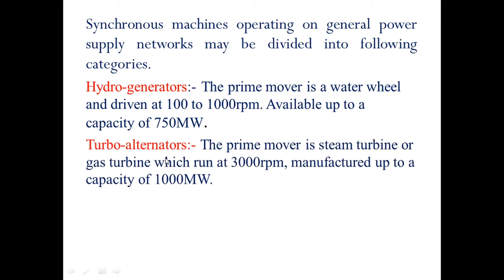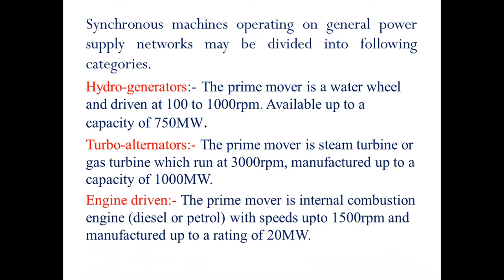Turbo alternators, also called high-speed alternators, use a steam turbine or gas turbine as the prime mover, running at 3000 RPM. They are manufactured up to a capacity of 1000 megawatt.